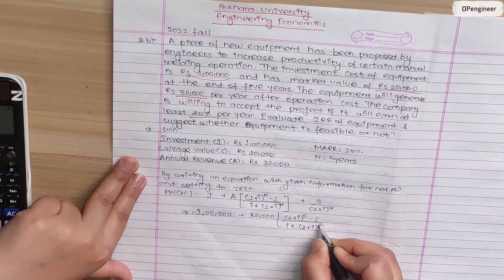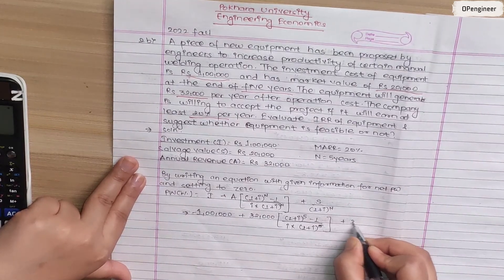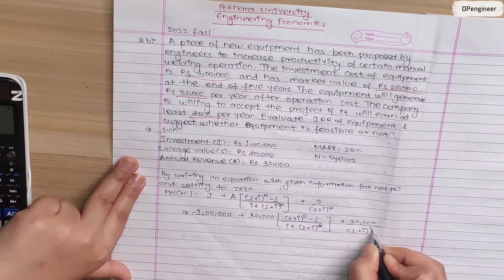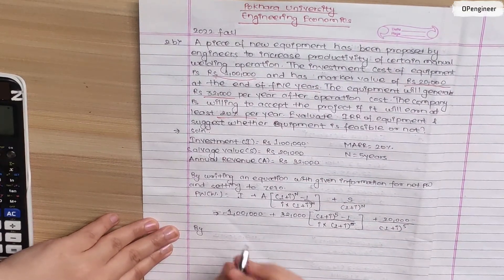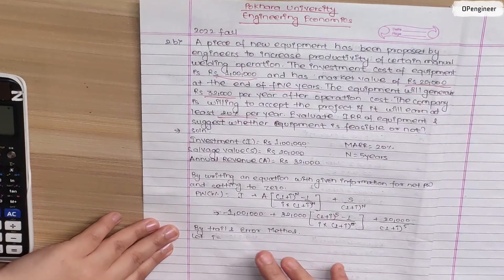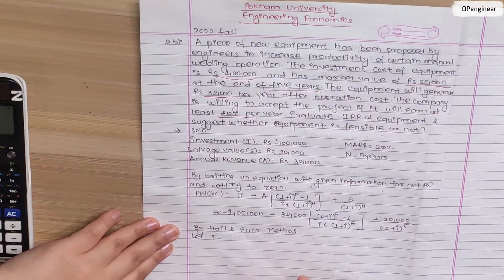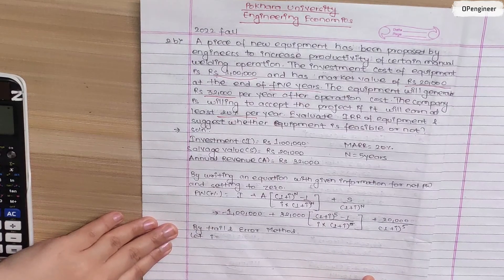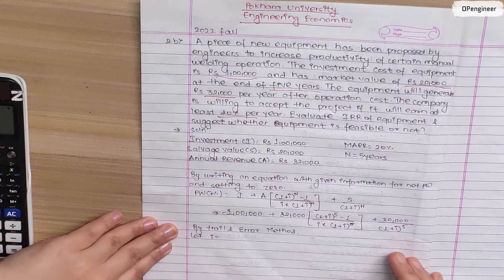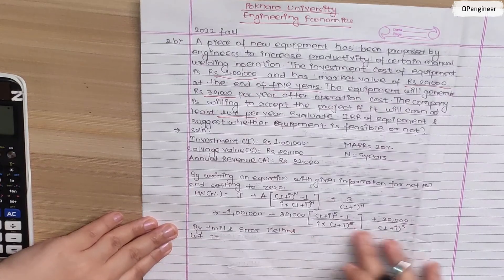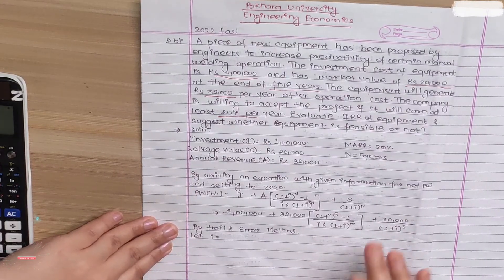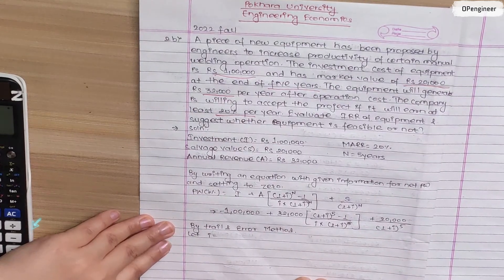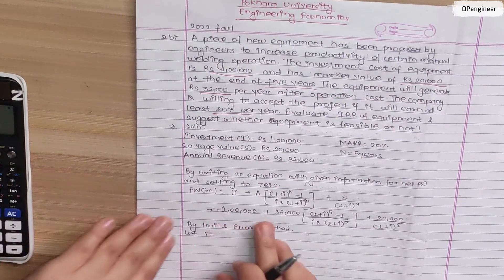By trial and error method, we change the value of i and calculate the present worth value. We need to find where the sign changes from positive to negative, or negative to positive, to determine the rate.